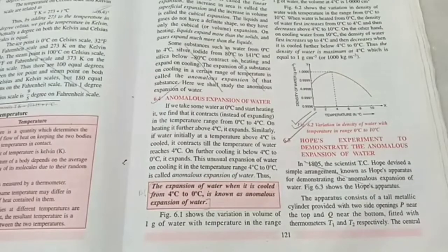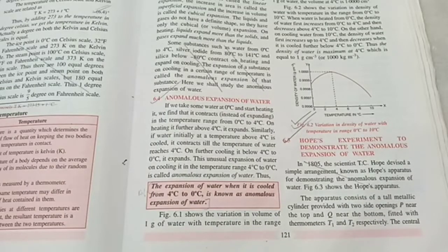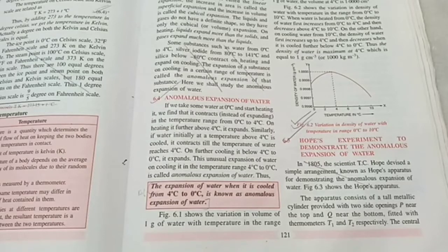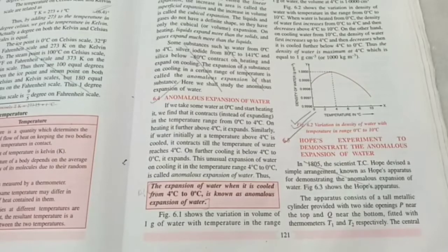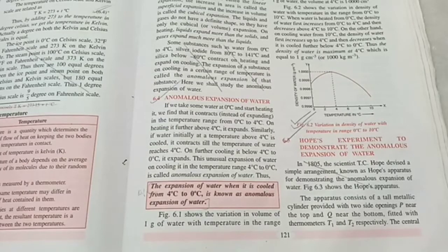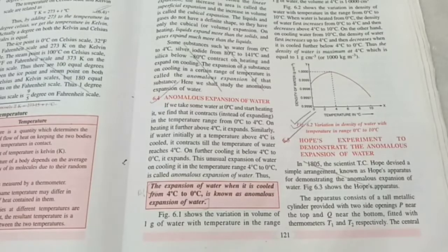Anomalous expansion of water. Imagine we have water at 10 degree Celsius, and we cool it. When we cool it, it contracts. Every substance, when cooled, contracts, because the molecules come closer to each other. Its kinetic energy decreases. The intermolecular attraction increases. So whenever you cool something, it contracts. Its volume decreases. Its density increases.